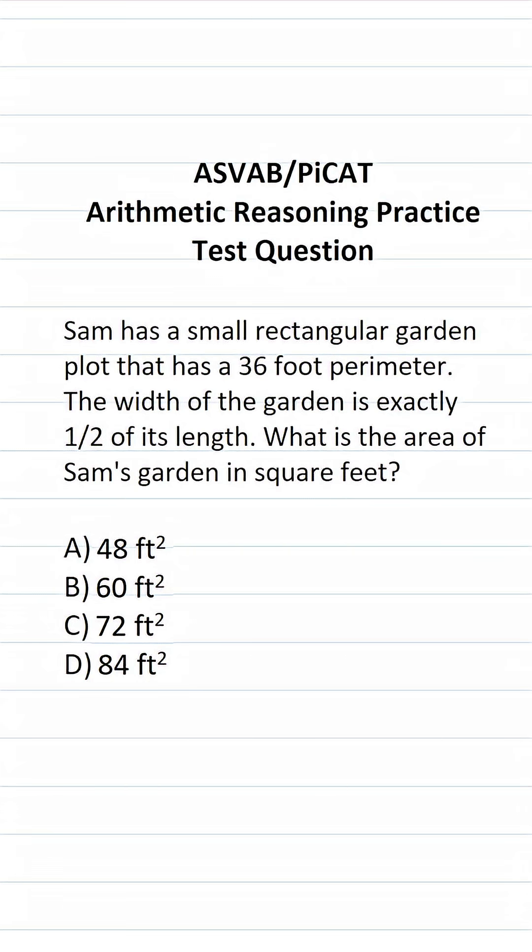This arithmetic reasoning practice test question for the ASVAB and PICAT says, Sam has a small rectangular garden plot that has a 36-foot perimeter. The width of the garden is exactly one-half of its length. What is the area of Sam's garden in square feet?